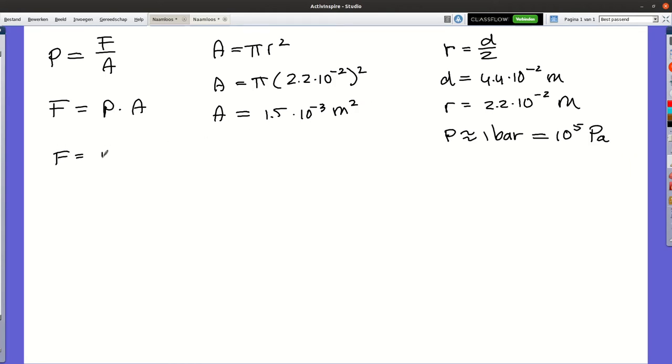The force then is 10 to the power of 5 multiplied by 1.5 times 10 to the power of minus 3, which is equal to 152 newtons. Now the mass then is the force divided by the gravitational constant, which is 9.81. So 152 divided by 9.81 is 15.5 kilograms.